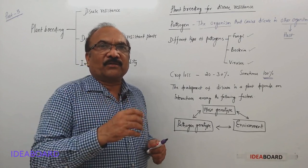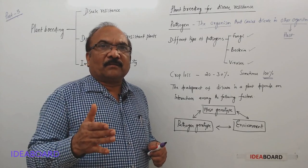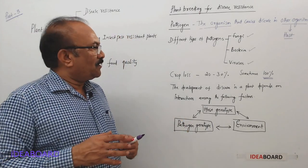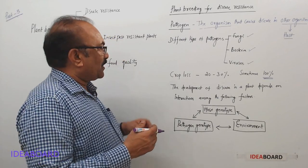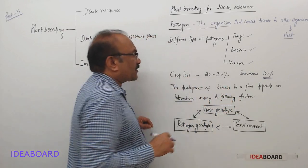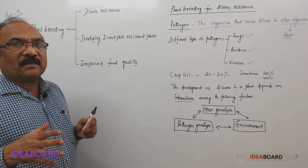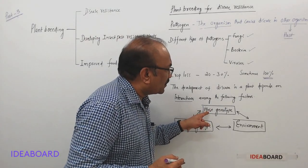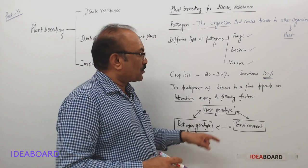Now let us see how disease develops in a plant. The development of disease in a plant depends on interactions among the following factors: the host genotype, the pathogen genotype, and the environment. Generally, these diseases are very common in tropical countries, where crops are frequently affected by pathogens.